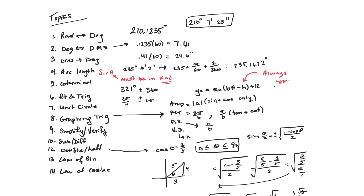Number two covers degrees to degrees-minutes-seconds. If you start with a degree in decimal form, take the decimal piece and multiply by 60 — that gives you another number with a decimal. The whole number part is your minutes. Take that decimal piece and multiply by 60 again to get your seconds. Round traditionally: 0.5 or more rounds up, 0.4 rounds down. For example, you get 210 degrees, 7 minutes, and 25 seconds.